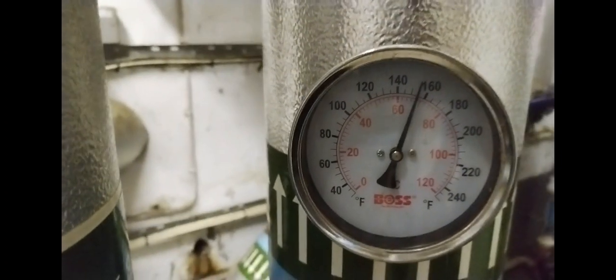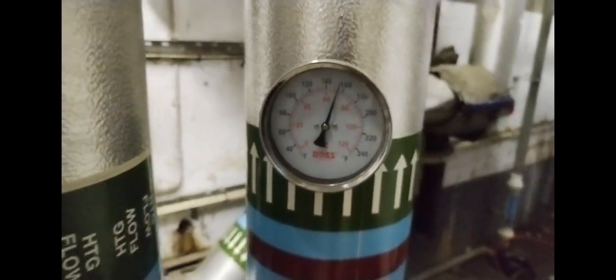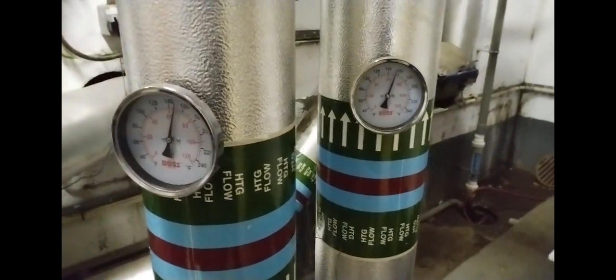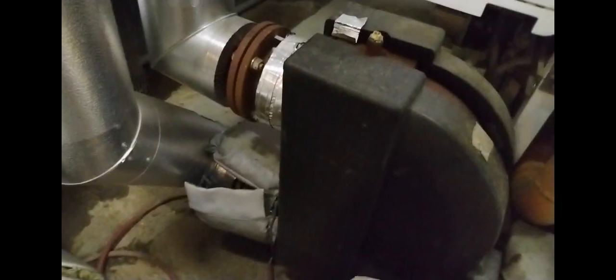I'm checking my temperatures on my boilers before I switch them off for servicing. This is my low loss header. We got about 65 to 60 Celsius on our flow and return.